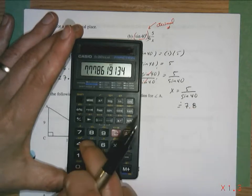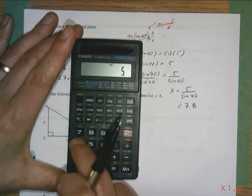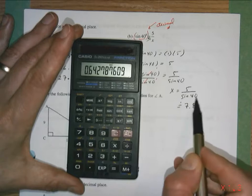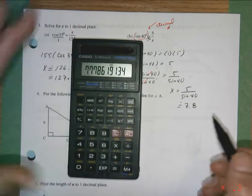Let's do that again so you see that. So it was 5 divided by 40 sine. That decimal is sine of 40. So it hasn't done the division yet. So I have to do equals and I get 7.8.